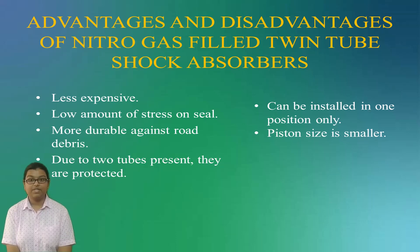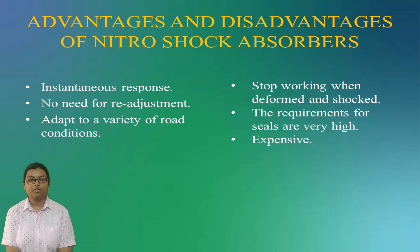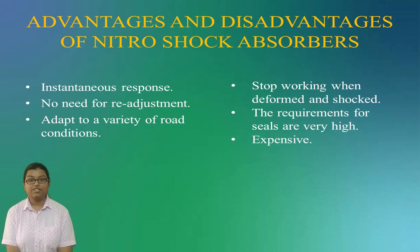Disadvantages of Twin-Tube Shock Absorbers: they can be installed in one position only and the piston size is smaller. The overall advantages of Nitro-Shock Absorbers are: they provide instantaneous response because the nitrogen gas eliminates foaming; there is no need for readjustment; and the main advantage is strong adaptability — they can adapt to a variety of road conditions. The disadvantages are: technical requirements for inflation are high; very difficult to repair when damaged; if softened and deformed, they will basically stop working completely; requirements for oil seals are very high; and the cost is relatively expensive.